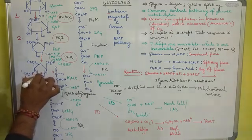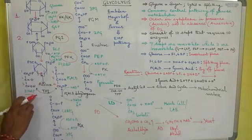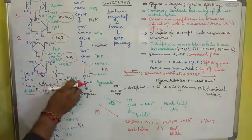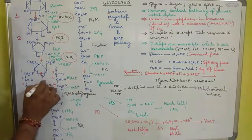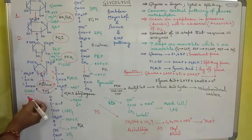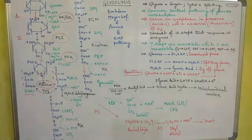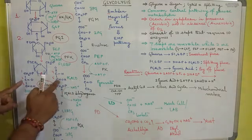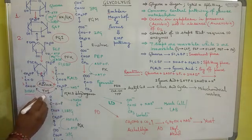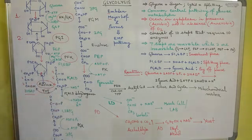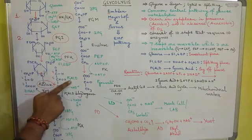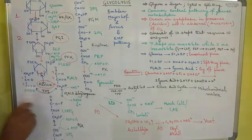Fructose 1,6-bisphosphate is then split into two triose phosphates: dihydroxyacetone phosphate (DHAP) and glyceraldehyde 3-phosphate (PGALD), by the enzyme aldolase. These two components can be interconverted by the enzyme triose phosphate isomerase. As a result, the dihydroxyacetone phosphate is converted into glyceraldehyde 3-phosphate, and two molecules of glyceraldehyde 3-phosphate are produced.